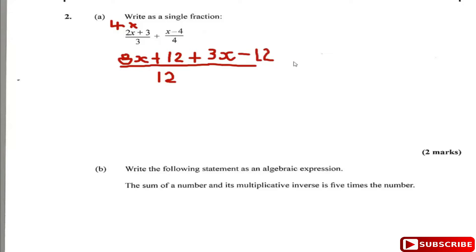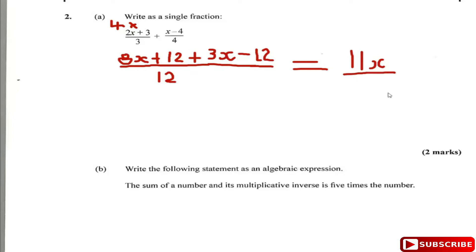Now all we have to do is add the numerators by combining like terms: 8x plus 3x gives 11x, and 12 plus minus 12 gives 0. So the answer is 11x over 12. That's how we write it as one single fraction.